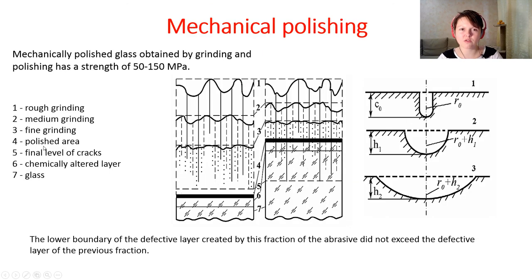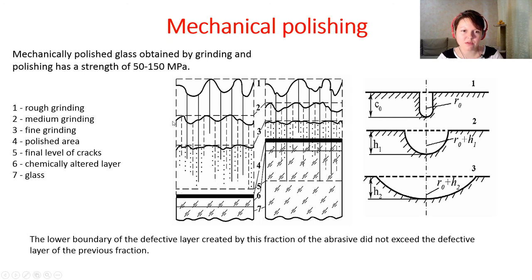Surface hardening methods for glass begin with mechanical polishing. The surface of rough-ground glass progresses through rough grinding, medium grinding, fine grinding, and polishing, resulting in a flat surface. However, after polishing there are still cracks going inside the glass surface — these are cracks included in the Grüneisen model. While polishing, the diameter of pre-existing cracks increases, which is why the value of glass surface defects decreases.